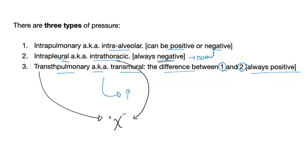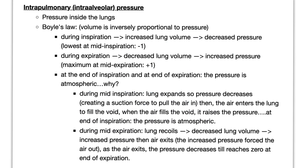If the intrapleural pressure is negative six, at that same moment the transmural or transpulmonary pressure is going to be positive six — same quantity, but the sign is different. Let's talk about intrapulmonary pressure, which is the pressure inside your lung or inside your alveoli. According to Boyle's law, when you inspire and inhale, the volume of your lung increases, so the pressure is going to decrease, because the relationship between pressure and volume is inversely related. The greater the volume, the lower the pressure. When you inhale, you increase the volume and decrease your pressure.